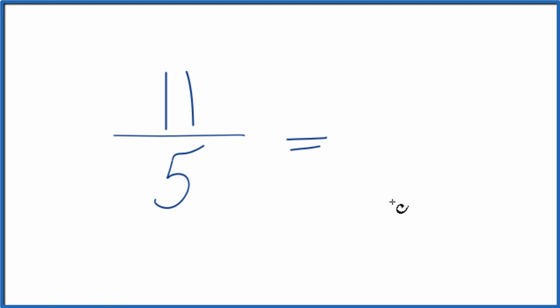To do that, we need to find a common factor, something that goes into 11 and 5 evenly. It turns out the only number that goes into 11 and 5 evenly is 1.